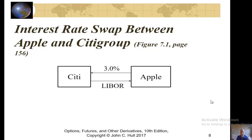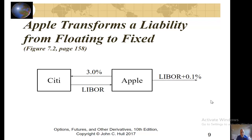Here is an example of a swap agreement between Citibank and Apple, where Apple receives the London Interbank Offer Rate (LIBOR) and pays out a fixed rate of 3%. Apple might use this to transform a liability from a floating rate to a fixed rate. So if Apple has a liability that it has to pay out a floating rate of LIBOR plus 0.1%, after doing this swap with Citibank, the LIBORs cancel out and Apple has a fixed rate liability of 3% plus 0.1%, or 3.1%.